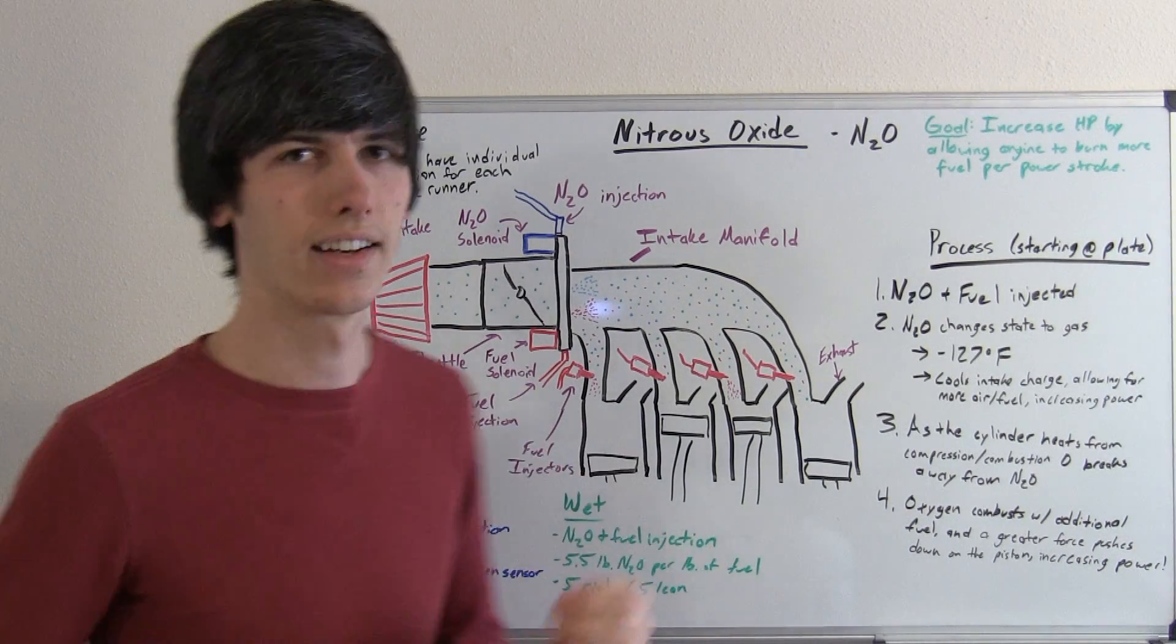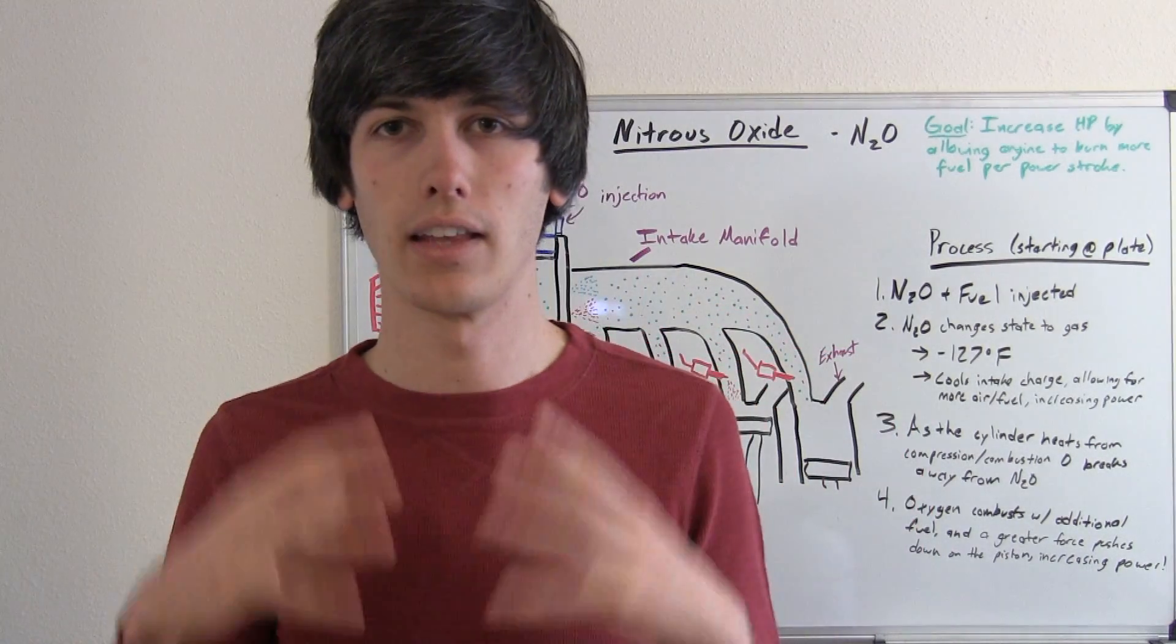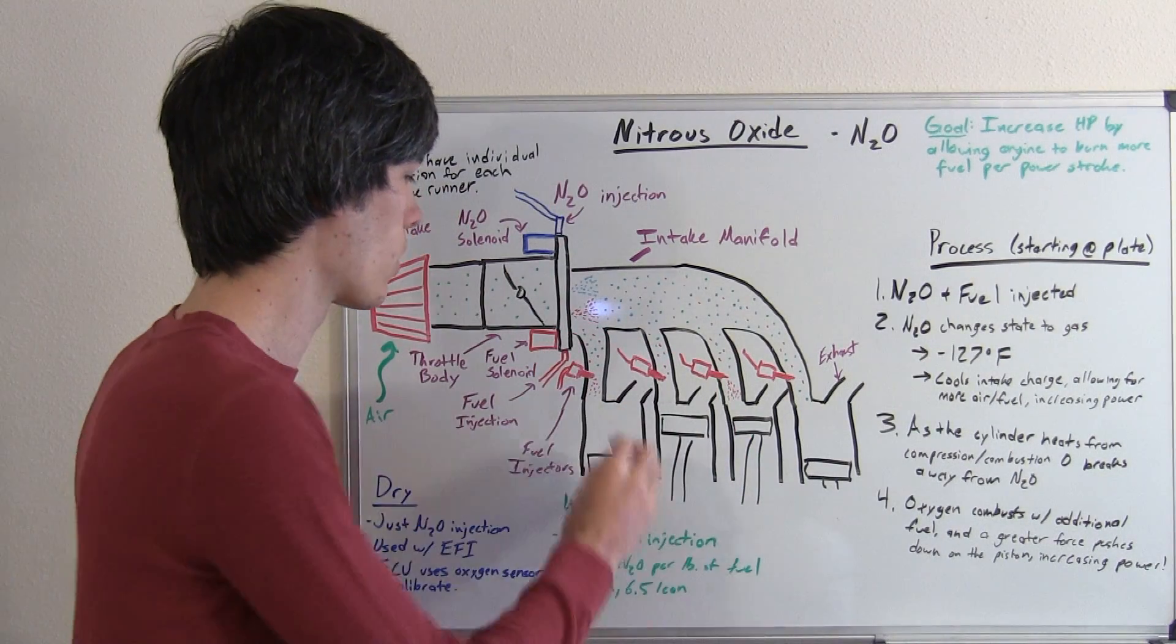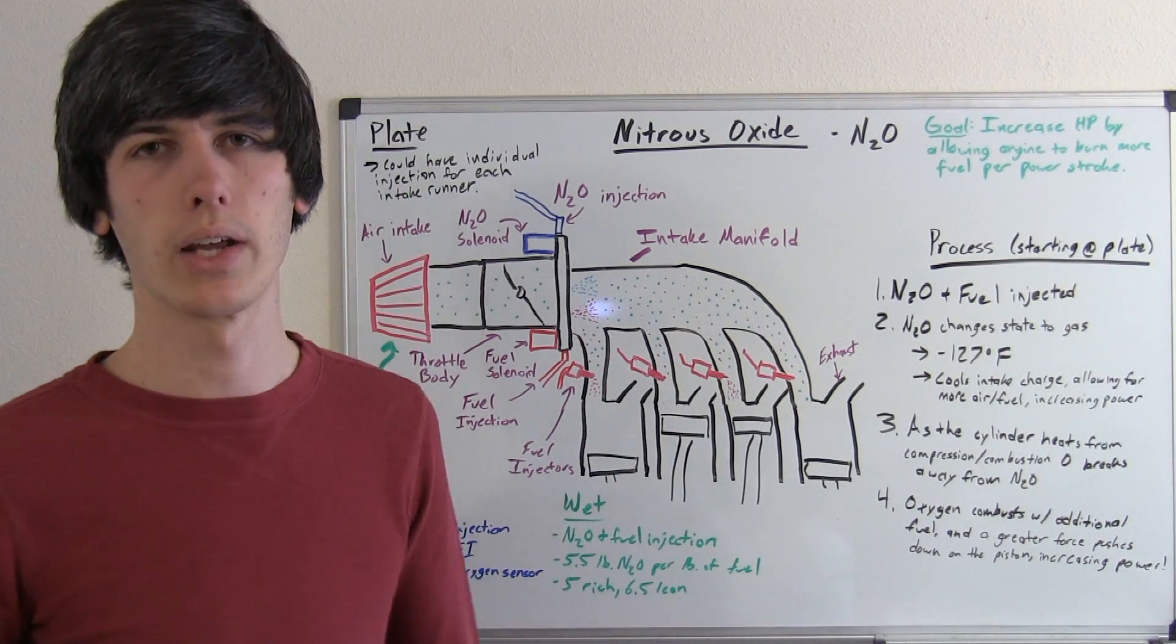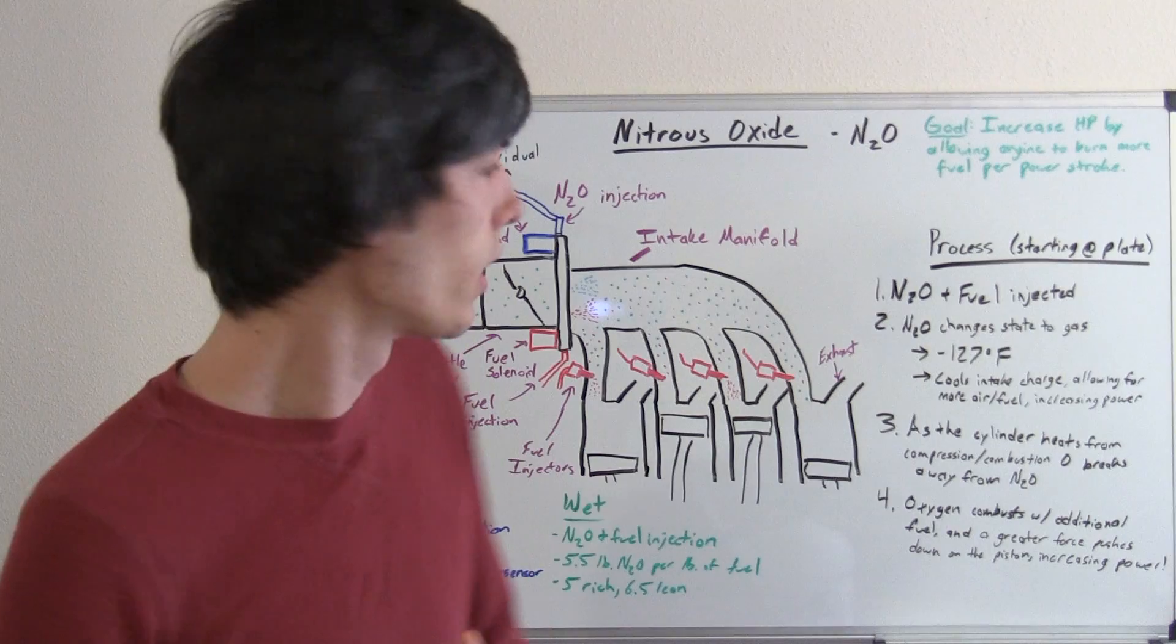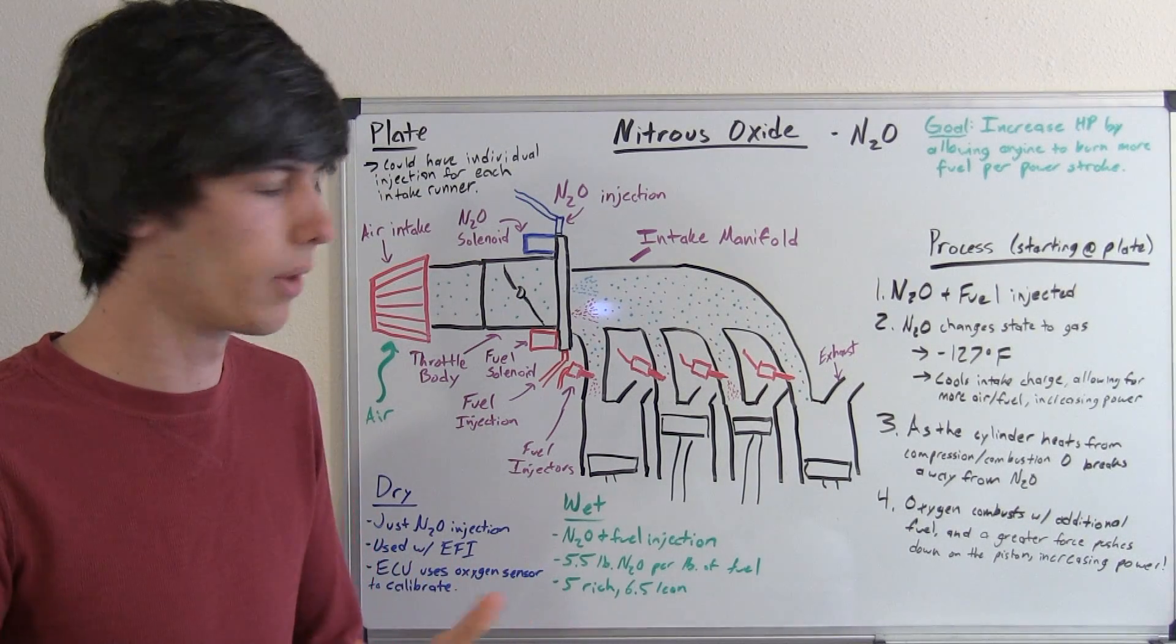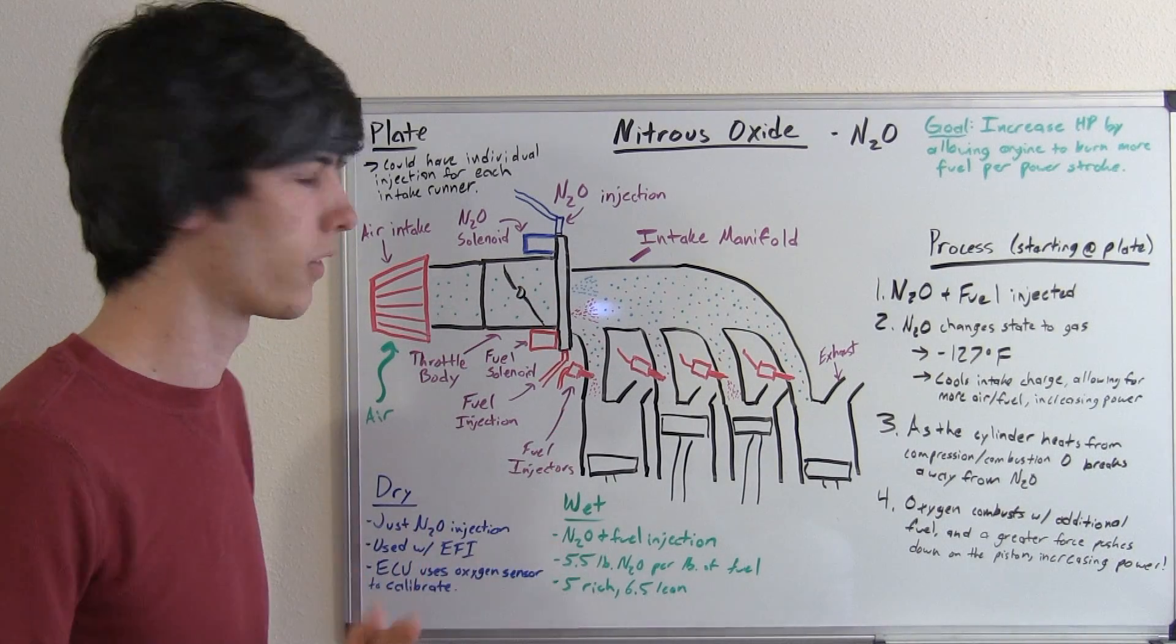So you've got more oxygen, you've got more fuel, and in the same power stroke, this is occurring. So you're going to create a larger reaction, a larger combustion, bigger force pushing down on that piston, and therefore create more power. So now let's take a look at what the actual system looks like, and how the flow of nitrous gets there, and how the flow of fuel gets there, and how the system works.